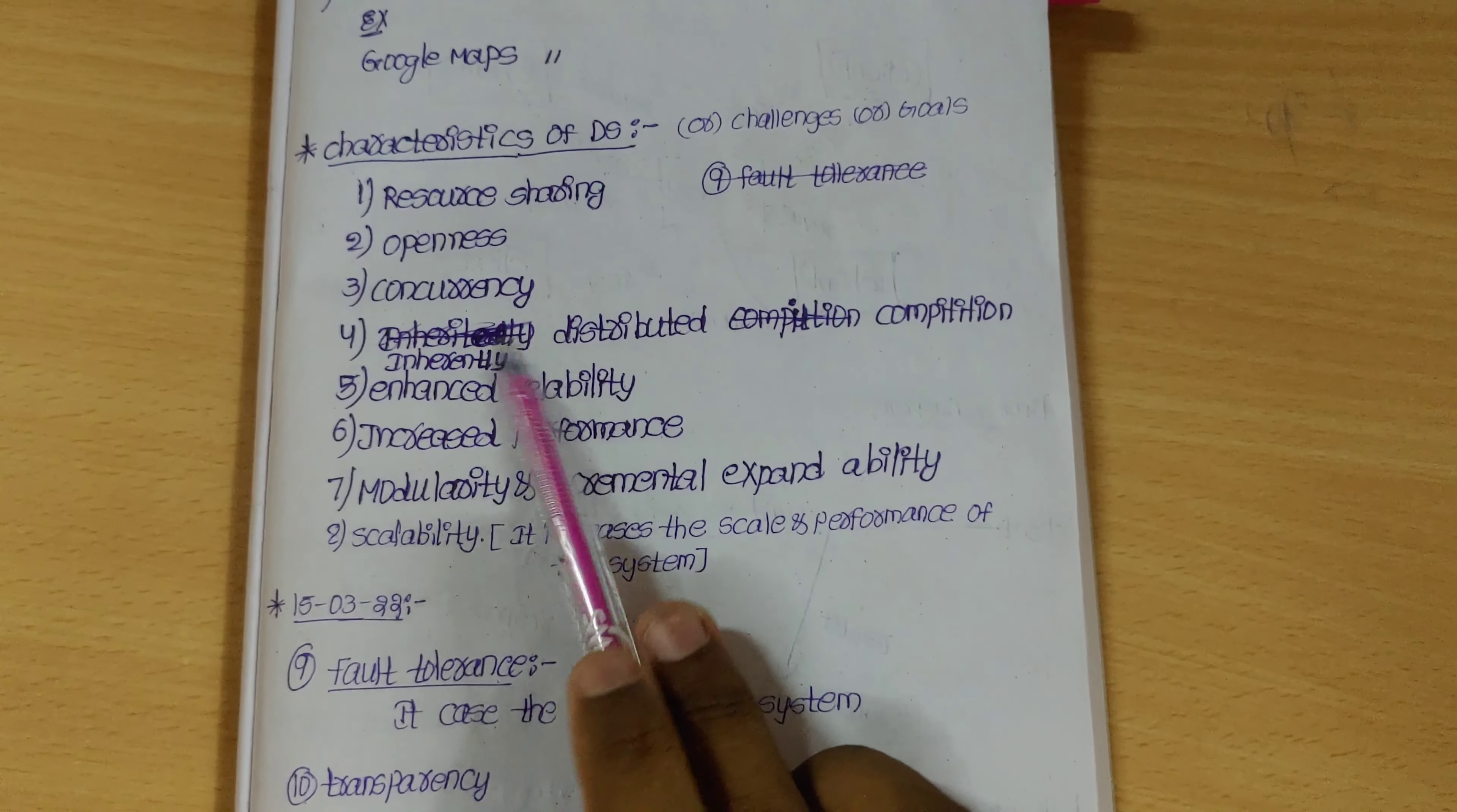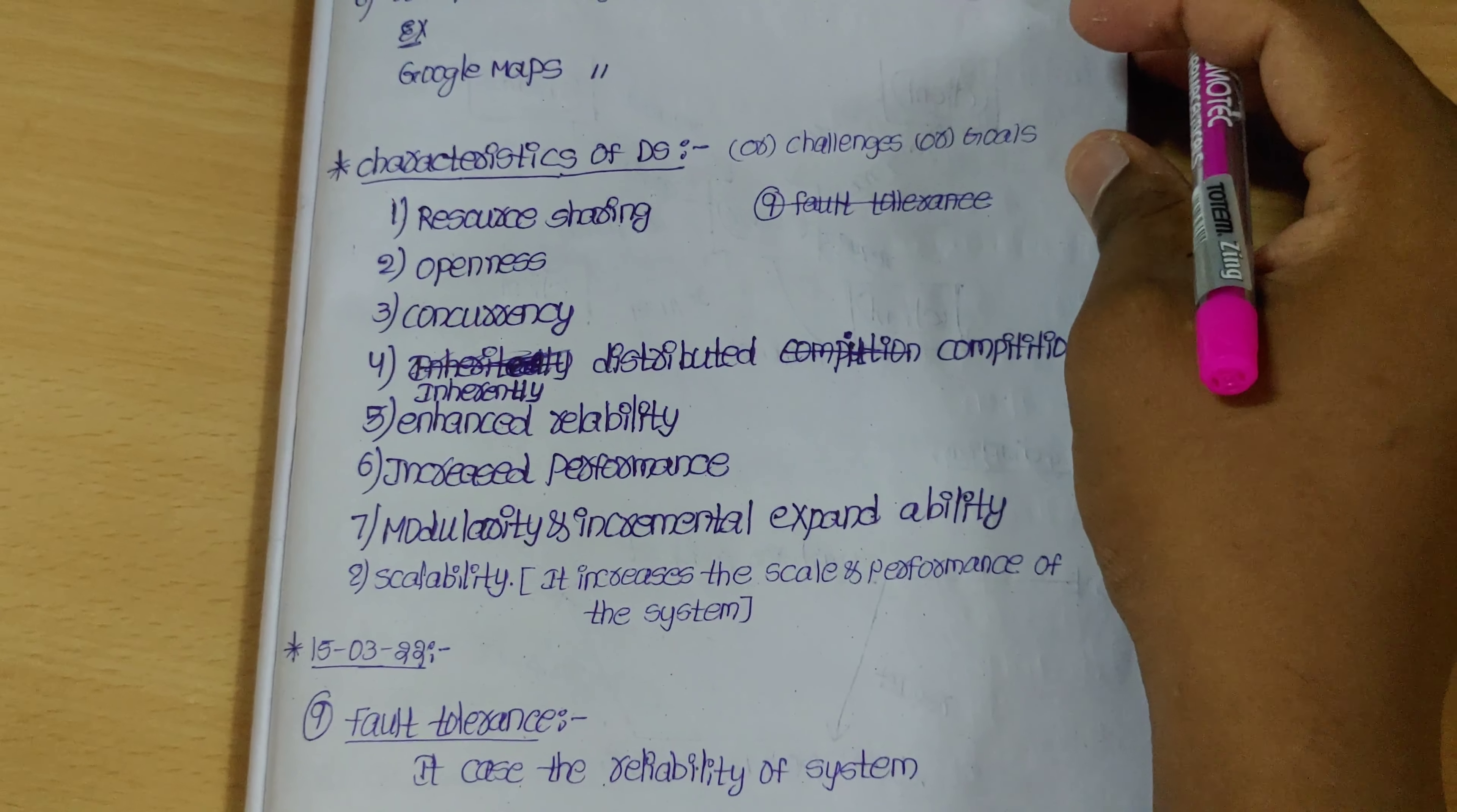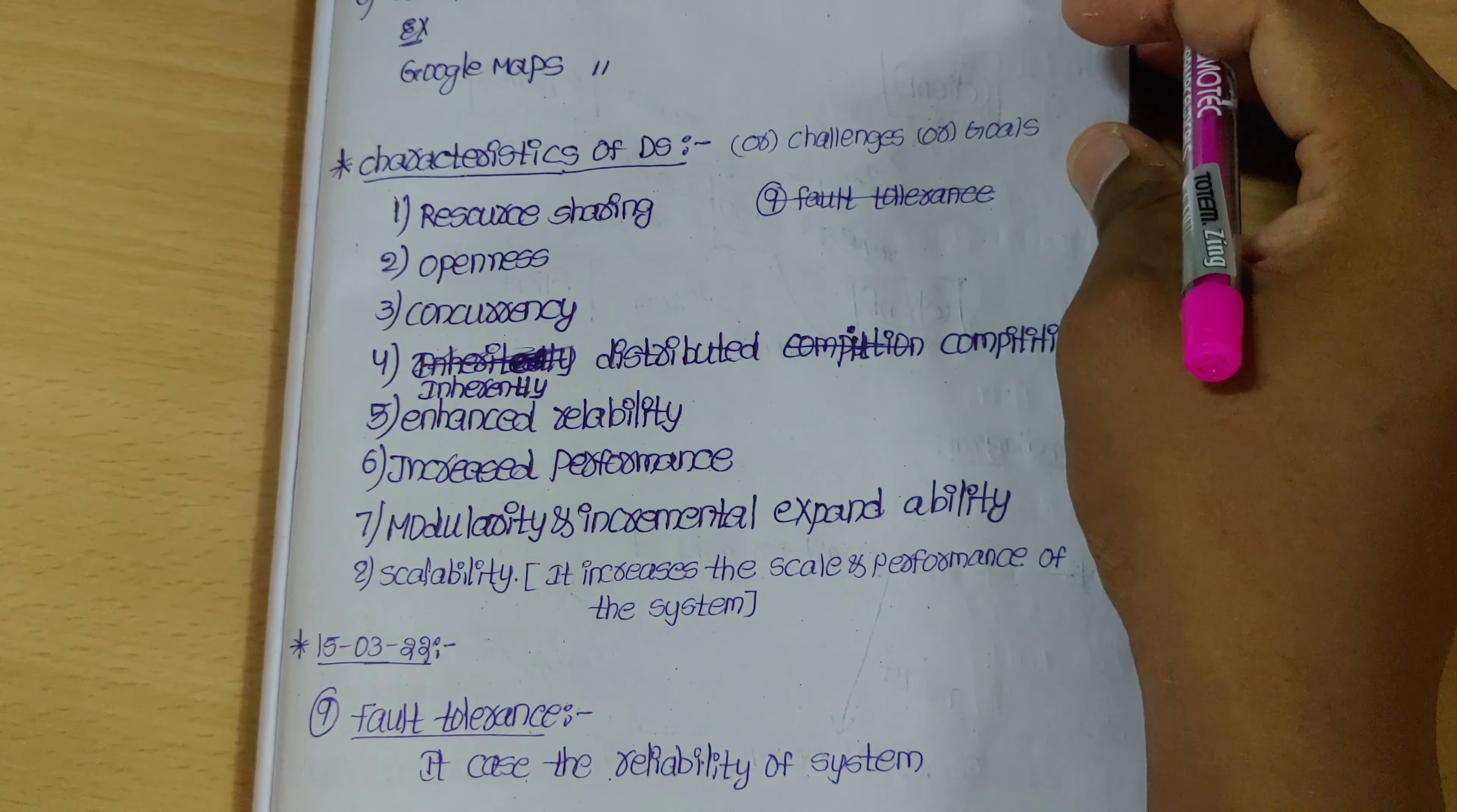Next is enhanced reliability. It increases performance - the lack of performance is reduced. Then modularity and incremental expandability. Time complexity and space complexity are considered when the process runs. Character resources are provided, and in the same way, tasks take certain time to complete.